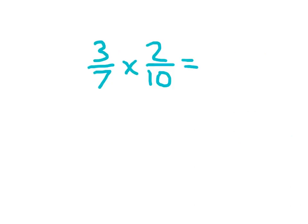Here I have the product of 3 sevenths and 2 tenths. So again, what I have to do is I just have to multiply the numerators together. That would be 3 times 2. And multiply the denominators together, which would be 7 times 10.